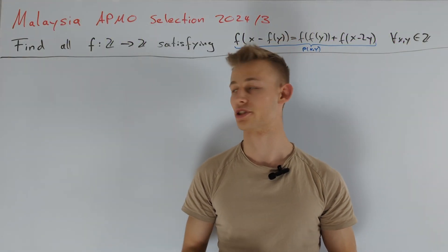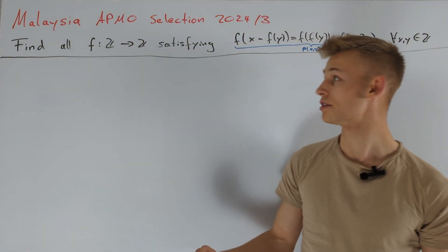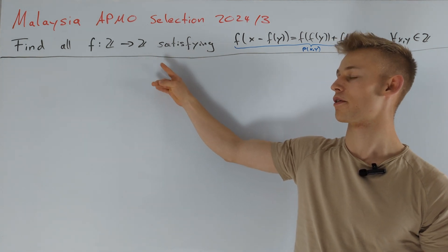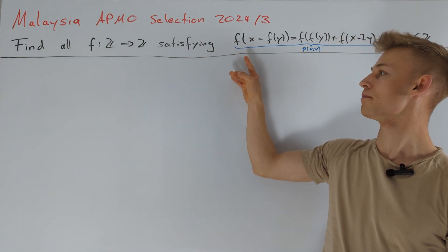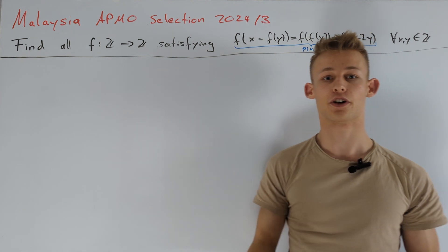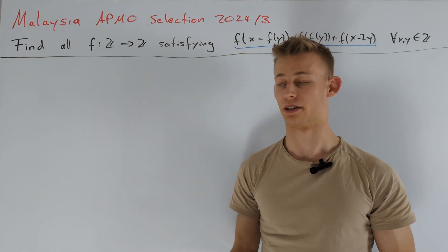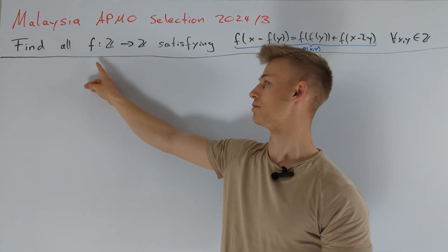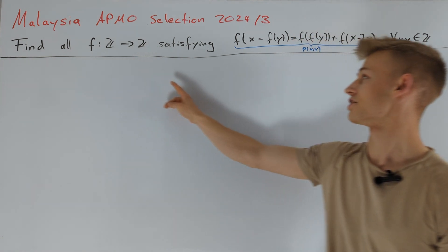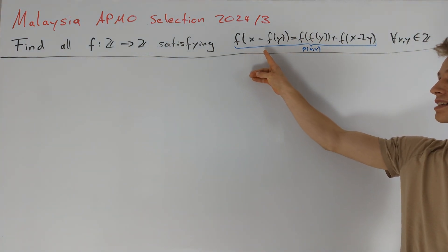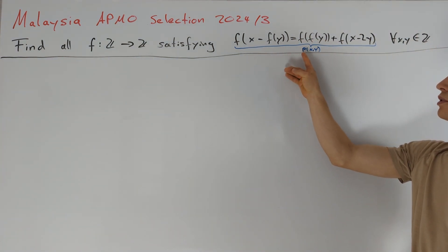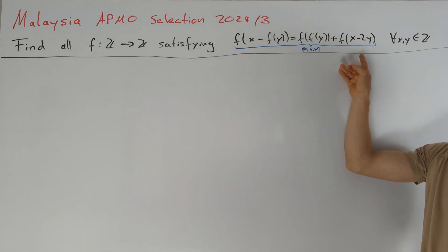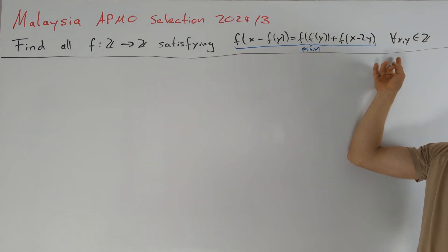Hey guys, today I want to present a solution to the selection test from Malaysia for the Asia Pacific Math Olympiad 2024, problem 3. First of all, let's take a look at the problem statement. We are asked to find all functions from the integers to the integers such that f(x) - f(y) = f(f(y) + f(x) - 2y) for all integers x and y.